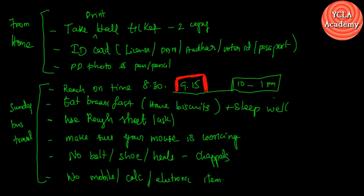Let's talk about what you need for the exam. You should be ready for the exam. If you have a copy of your hall ticket in the exam hall, you will be able to save a copy for the future, which will be helpful for certification verification. By that time, you may not even remember your roll number or application number. So it is better to have the hall ticket printed with two copies — black and white is enough. If you have an ID card, bring the original: a license, PAN card, Aadhaar, Voter ID, or Passport. If you have a passport-size photo, you will need it for the application.